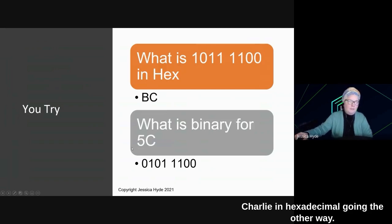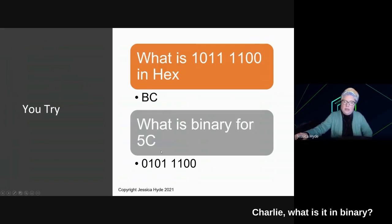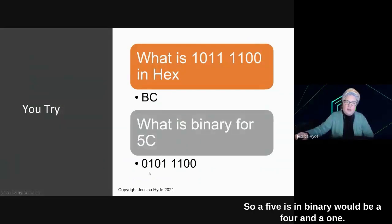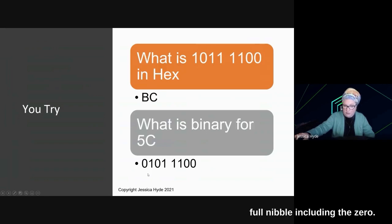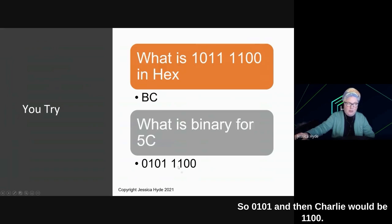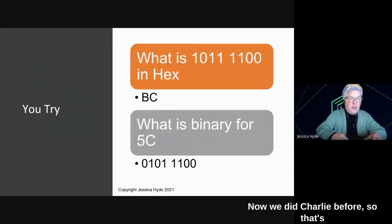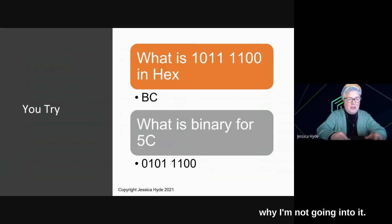Going the other way, if we have hexadecimal number 5 Charlie, what is it in binary? So a 5 in binary would be a 4 and a 1. So we would write out the full nibble, including the 0, so 0, 1, 0, 1. And then Charlie would be 1, 1, 0, 0. Now, we did Charlie before, so that's why I'm not going into it.